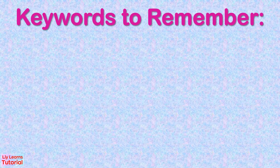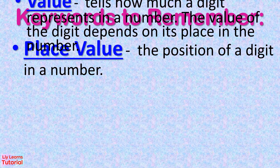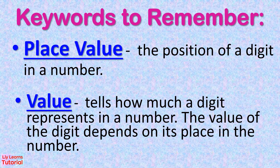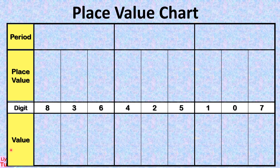Keywords to remember. Place value: the position of a digit in a number. Value: tells how much a digit represents in a number. The value of the digit depends on its place in the number. On a place value chart, we have period, place value, and value.